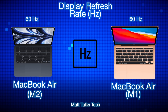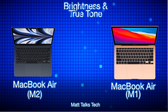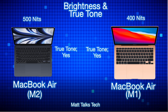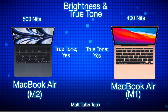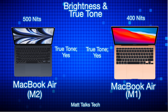The display refresh rate is also very similar — both are 60Hz. They are not ProMotion displays like the 14 and 16-inch MacBook Pro, which can go from 10Hz up to 120Hz. These are static at 60Hz and cannot be adjusted. For brightness, both displays have True Tone, but the MacBook Air M1 has a 400 nits display whereas the MacBook Air M2 has 500 nits, making it a little brighter.